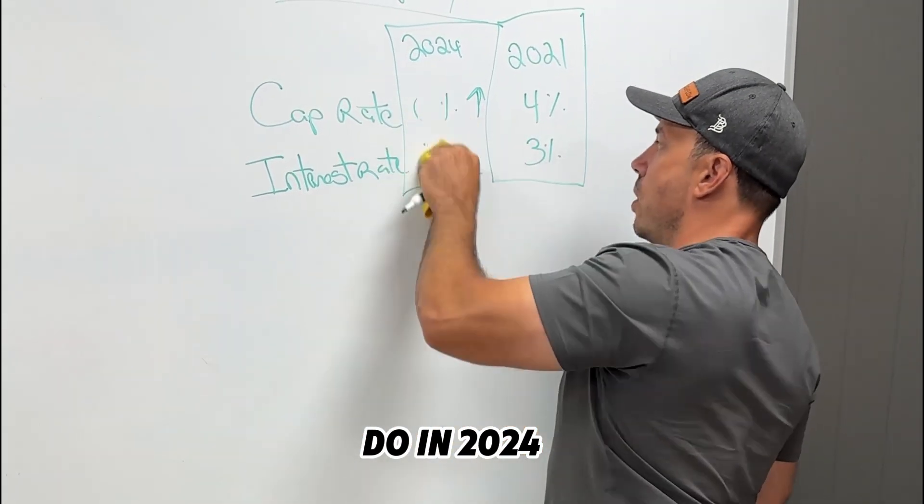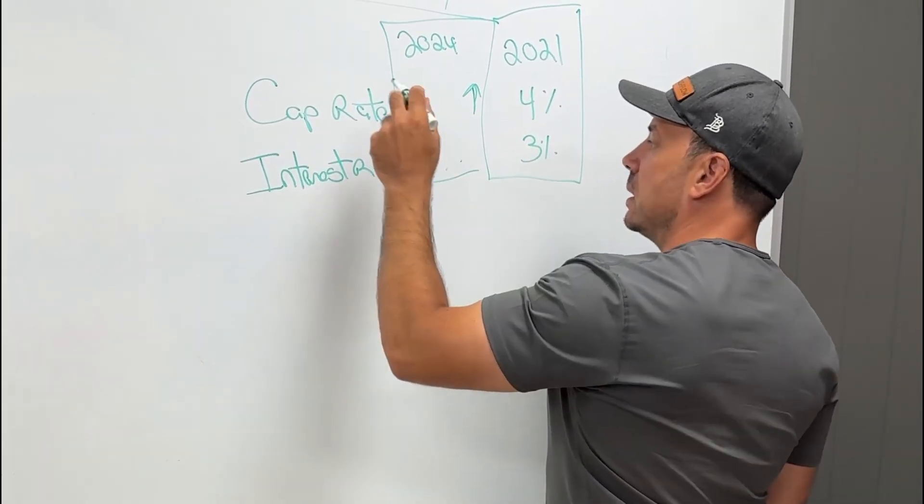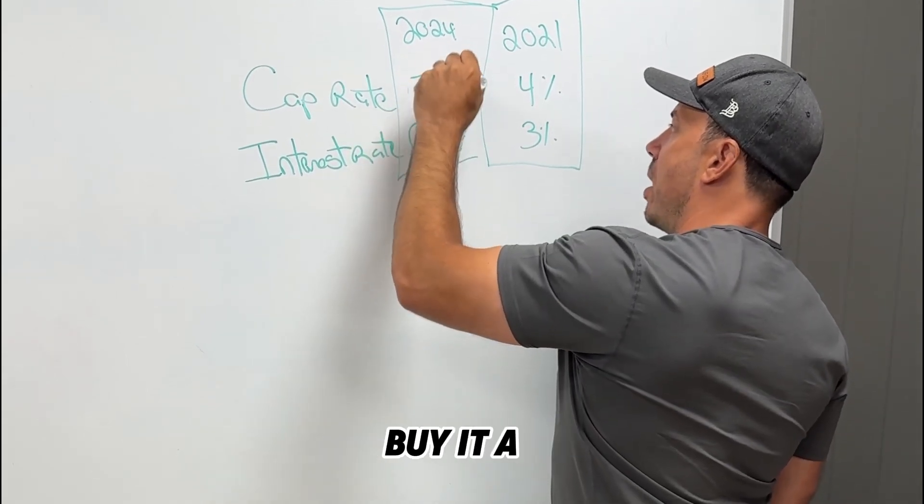What you want to do in 2024 is you want to go to a local bank. Local banks typically do a little bit better. 6.5. And you'll buy it a 7.